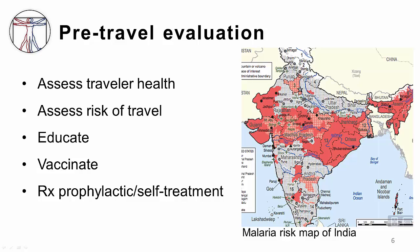Sometimes we give patients self-treatment medications — for example, medications to treat themselves if they develop severe diarrheal disease. What I have here is a malaria risk map of India. You can see that India is a very heterogeneous country when it comes to malaria risk — the dark red areas are the most high risk, whereas the cross-hatched areas have some risk, and the white areas are felt to have no risk. So it really depends on where they are planning to travel to help you decide whether they need something like malaria prophylaxis.